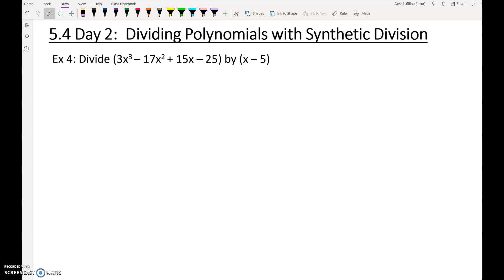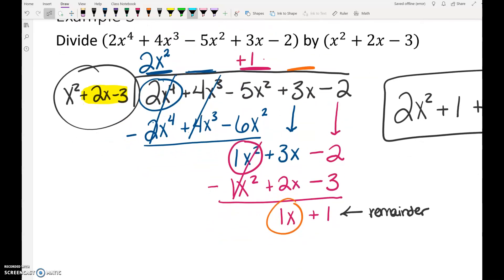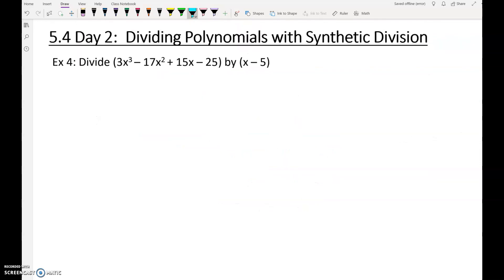Synthetic division is another way to divide polynomials, however it only works in specific cases. If you have a polynomial divided by a binomial, like x minus 5, you can use synthetic division. Our last example yesterday we were dividing by x squared plus 2x minus 3. You would not be able to use synthetic division for that problem, you would have to use long division. But if you are dividing by a binomial, a plain x, you can use synthetic division.